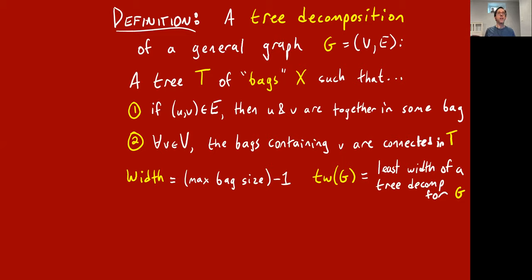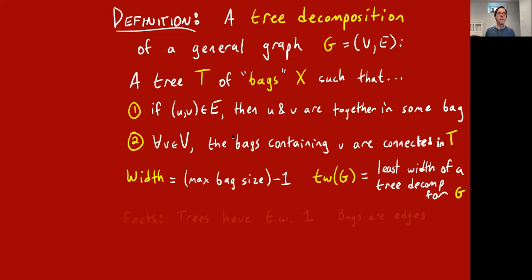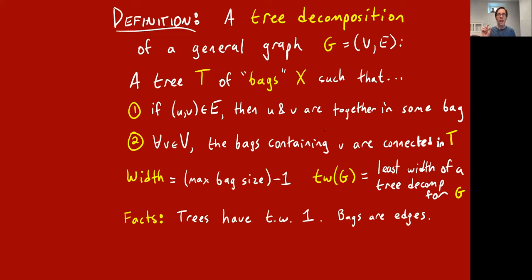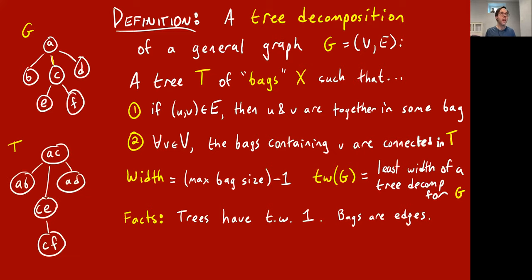Here I've summarized and repositioned facts about tree width. Fact one: trees have tree width one, and the bags are just the edges. Here's an example — here's a tree G and here's a tree decomposition for it. I took the first edge AC and made it a bag, then took AB and made it a bag.